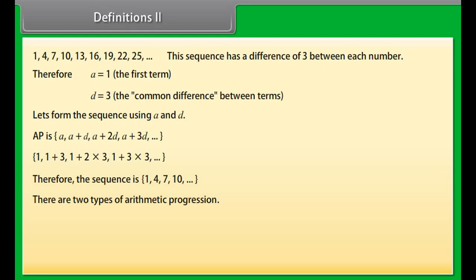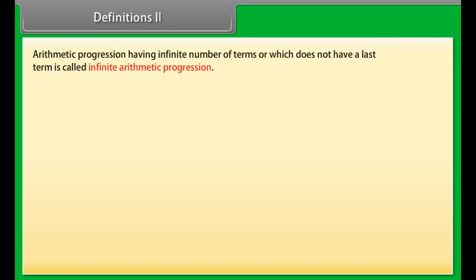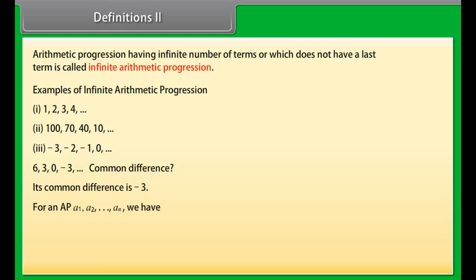There are two types of arithmetic progression: finite arithmetic progression and infinite arithmetic progression. The AP having a finite number of terms, or which has a last term, is called finite arithmetic progression. An AP having an infinite number of terms, or which does not have a last term, is called infinite arithmetic progression. In general for an AP A1, A2, ..., Am, the common difference D is given by D = A(k+1) − Ak.